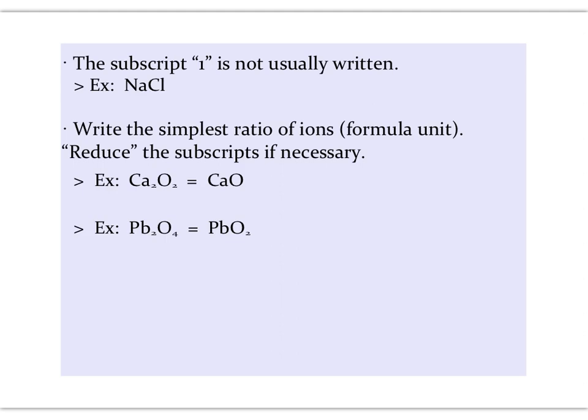In any chemical formula, we usually do not write the 1 as a subscript, like in NaCl. For ionic compounds, we are always going to write the smallest whole number ratio of ions possible. So this is called a formula unit, instead of molecule, which we use for covalent compounds. So if you look at the subscripts, and you can divide them both by a number to make them a smaller whole number ratio, that's what we're going to do. So in Ca2O2, we take each of the subscripts and divide them by 2, and then we get CaO. In Pb2O4, again, take each of the subscripts and divide them by 2, and then we get PbO2.